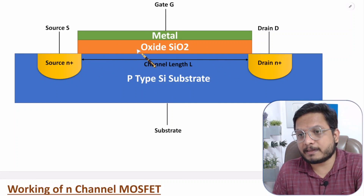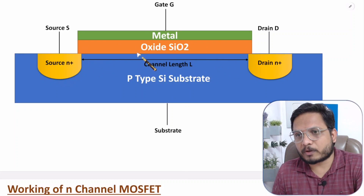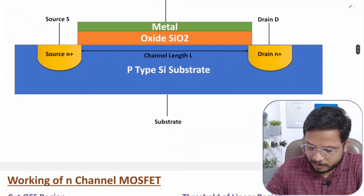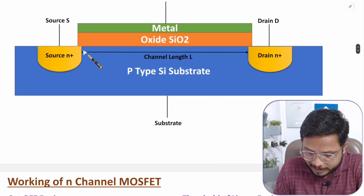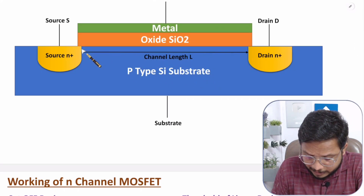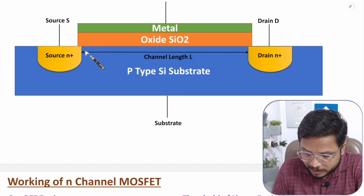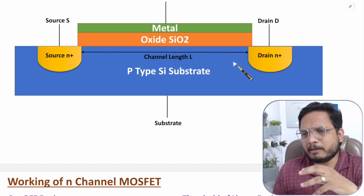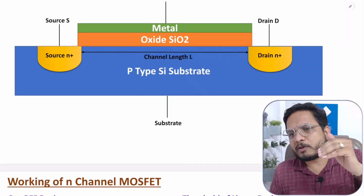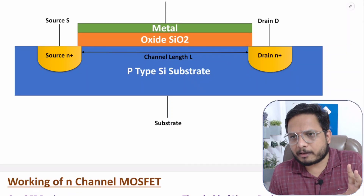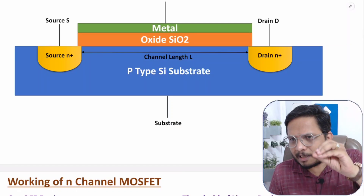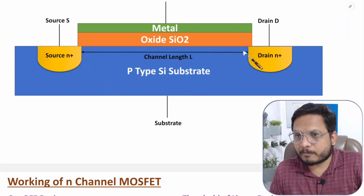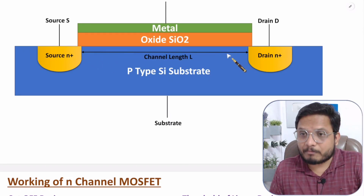As for depletion type MOSFET, in the P-type substrate there has to be N-type material by default — meaning a default channel will be present. In the majority of cases, you will observe that enhancement type MOSFET is used. In depletion type, there is a channel by default, while in enhancement type there is no channel by default — a gate bias voltage must be applied to form a channel.